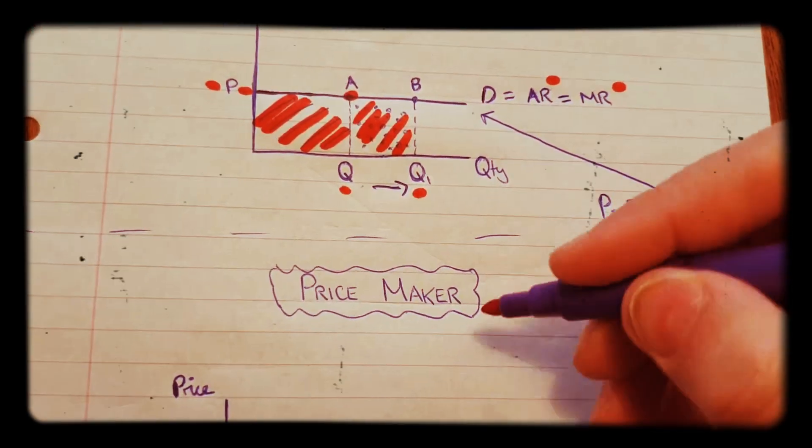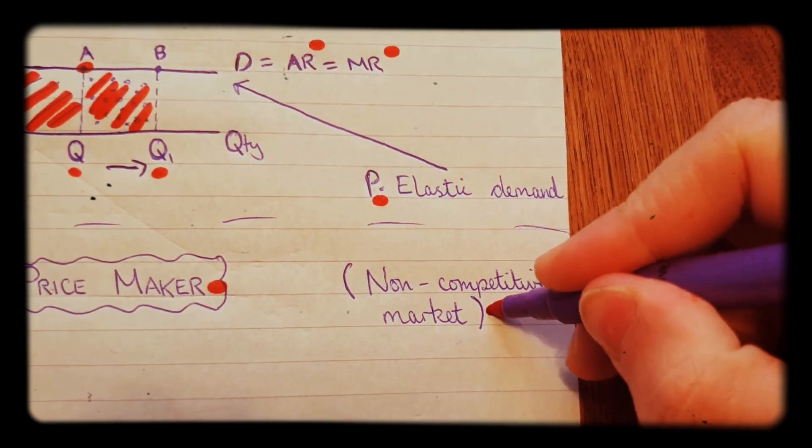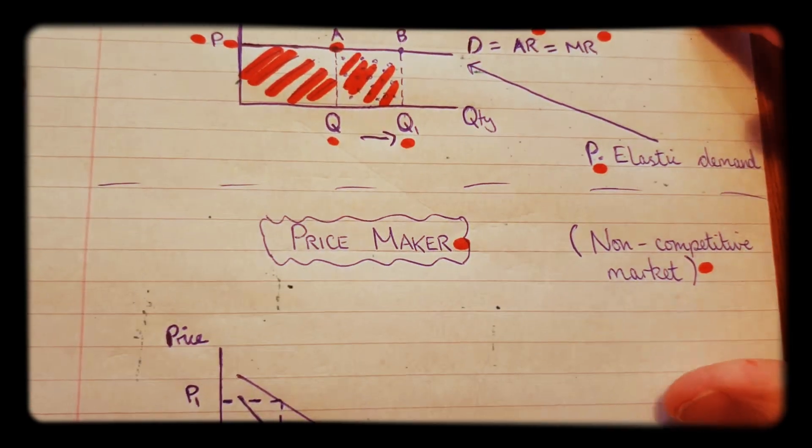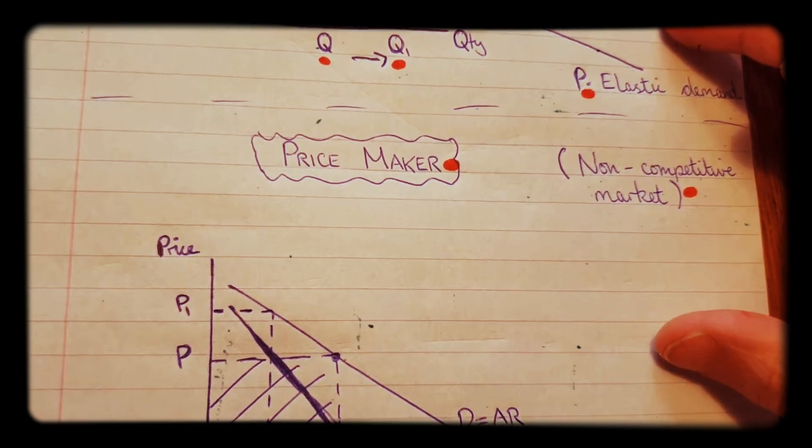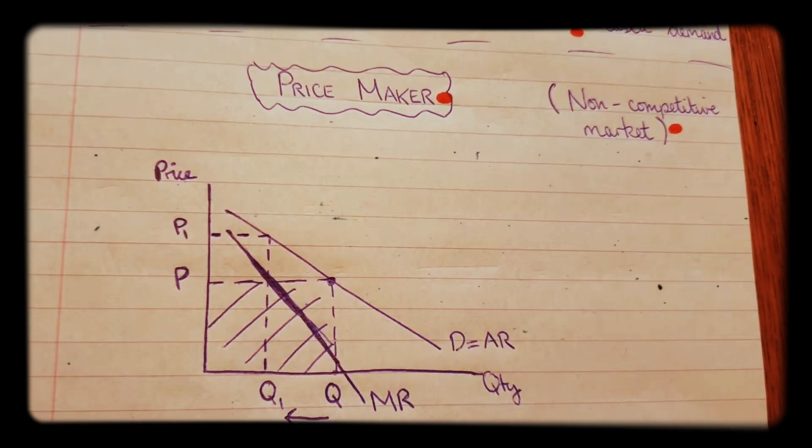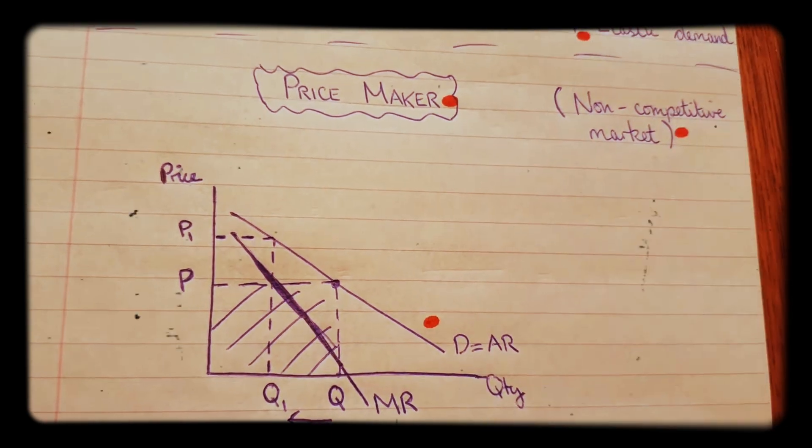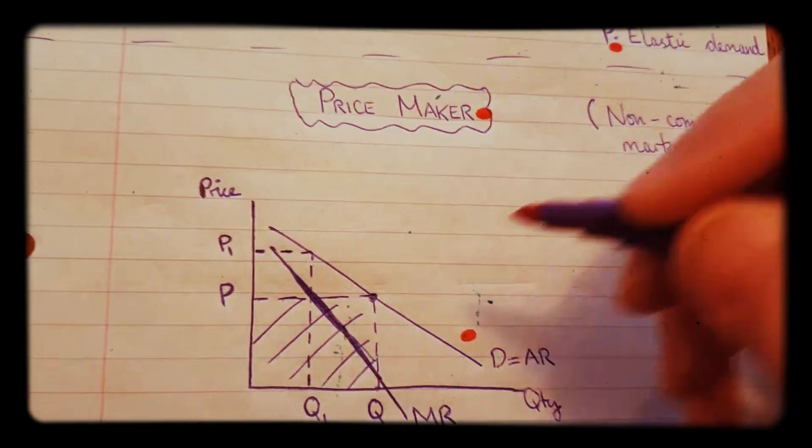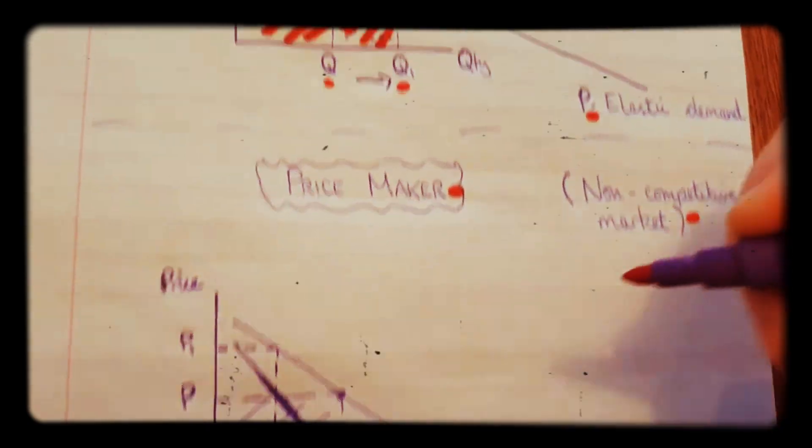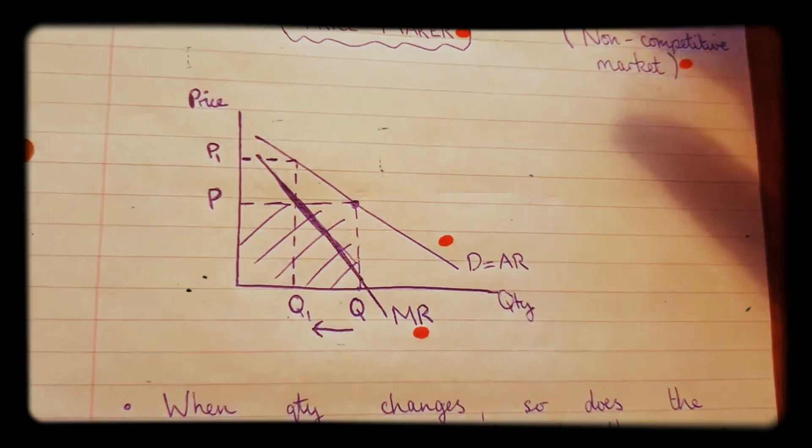So now we're going to move on to the price maker diagram. Price maker, this will be in a non-competitive market or imperfect competition. This might be drawn in the case of monopoly. So here we have the diagram. The first difference you'll notice is that they're downward sloping curves now. This is the demand curve equals the average revenue curve, but now we have a different curve that's drawn for the marginal revenue. They are no longer the same like in this diagram where they were the same. Now there are two curves, and I'll explain why in a minute.